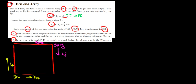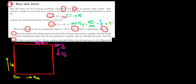Now let's look at Jerry. Jerry has the production function K plus L. To draw the isoquant on the Edgeworth box, we need the MRTS — the marginal rate of technical substitution — which gives us the slope of the isoquant. For Jerry, MRTS equals marginal product of labor divided by marginal product of capital. The derivative of K+L with respect to labor is one, and with respect to capital is also one, so one divided by one equals one. The isoquant will have a slope of one — it's a straight line.